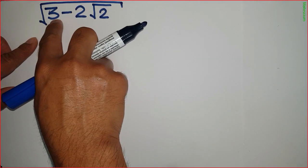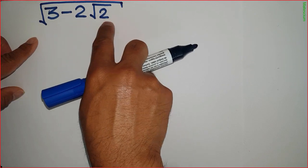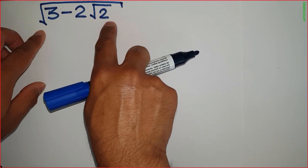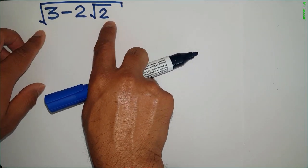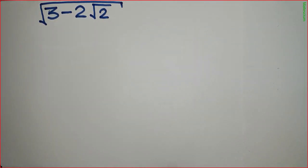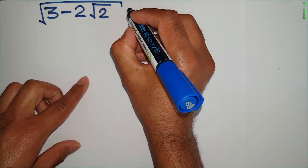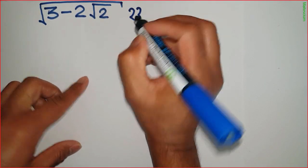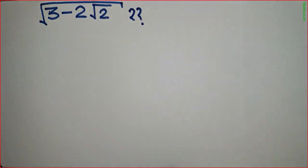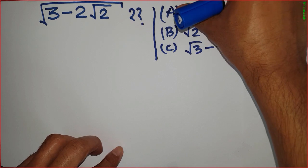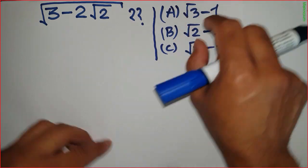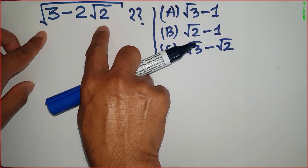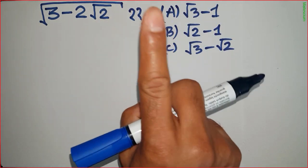Square root of (3 minus 2 square root 2). This is a mathematical statement that has a simplified and simple solution. The question is: what is the simple solution of this mathematical statement? There are three possible simplified solutions.